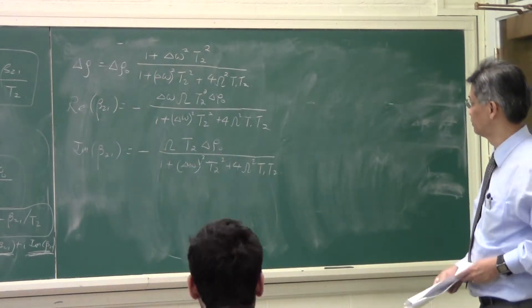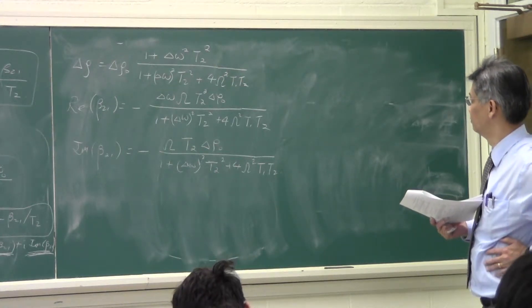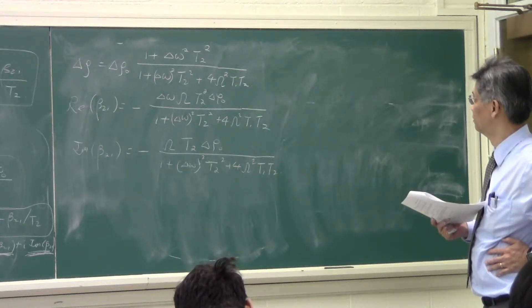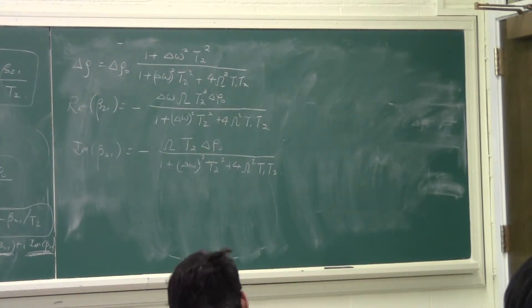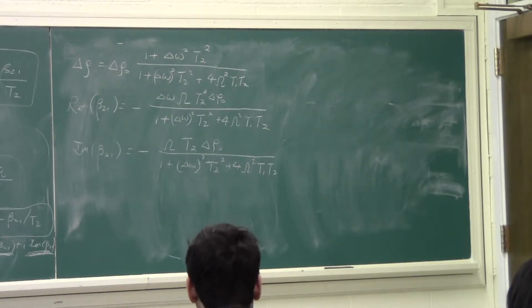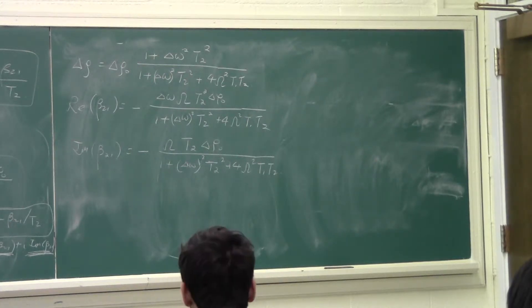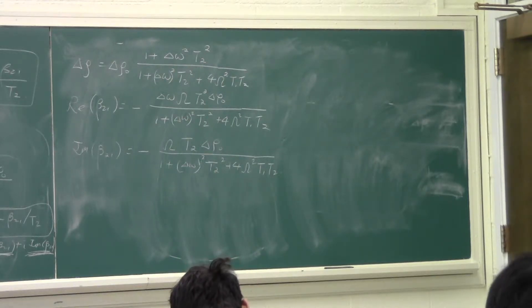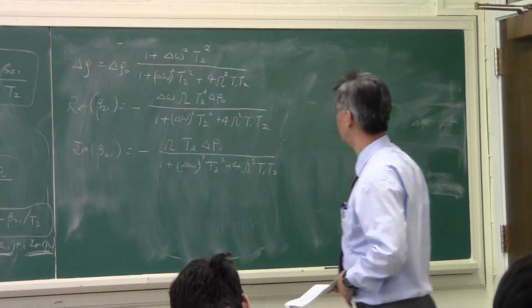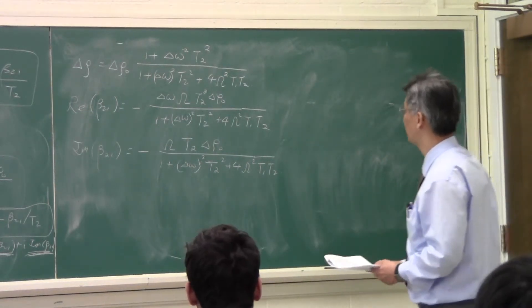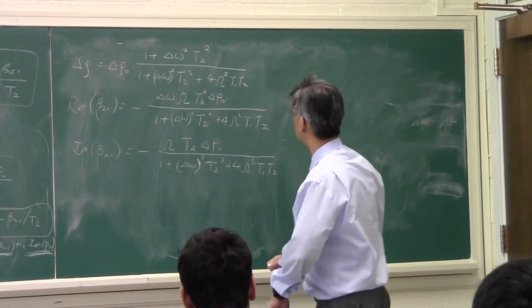So these are the four solutions that you can obtain by solving those equations. Let's look at some of the salient features for these solutions. One of the things that you notice is that even though we have a perturbing field, we did not use perturbation theory to solve this problem approximately — we solved this problem as fully as possible. So E0 need not be a small quantity; E0 is just the amplitude of the exciting field. E0 translates to capital Omega, and capital Omega need not be a small quantity in this.